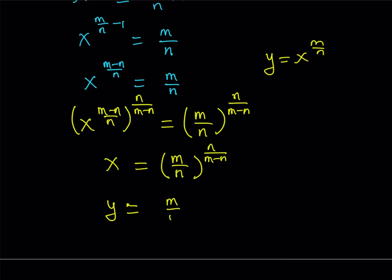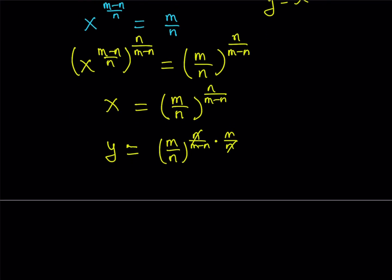So this is m over n to the power n over m minus n. And when you raise it to the power m over n, the exponents are just going to be multiplied, canceling out the n. And we should be getting the y value from here. And that should equal m over n to the power m over m minus n.